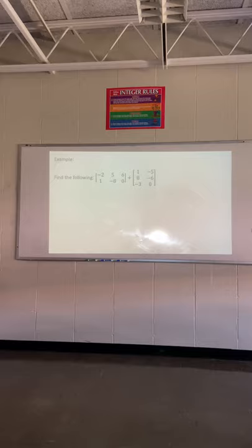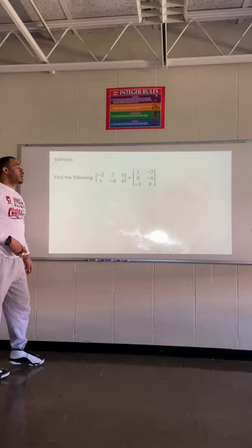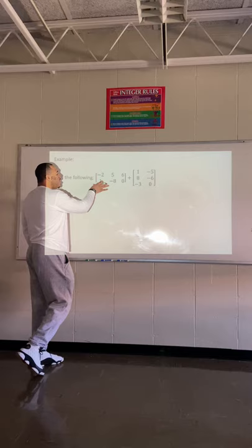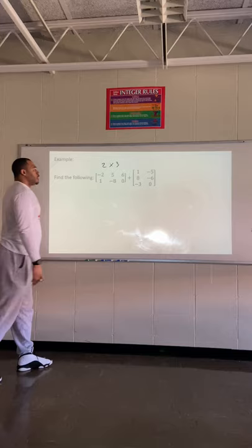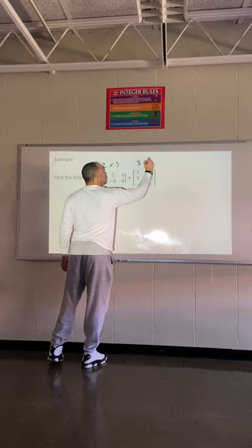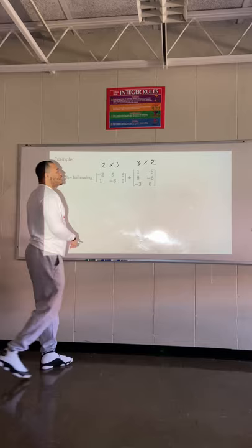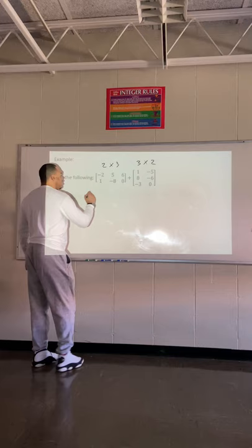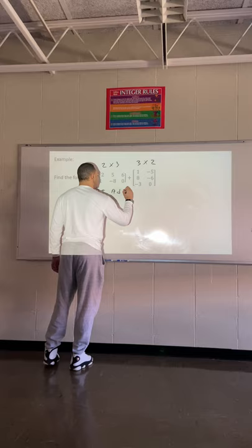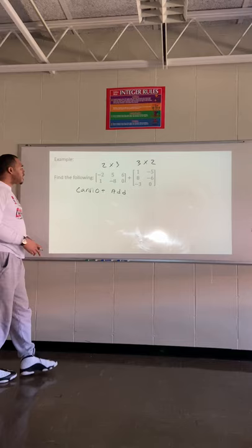In this next example, it wants us to add two matrices. The first matrix has two rows and three columns — a 2×3. The second matrix has three rows and two columns — a 3×2. Right away we notice these dimensions are not the same, so we cannot add these two together.